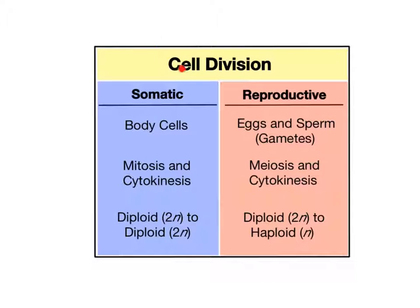Cell division is the process of generating new cells. It can be classified into two types, somatic and reproductive cell division.